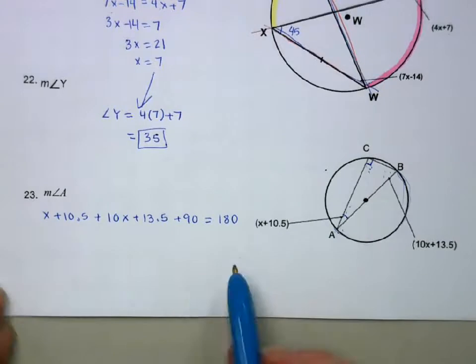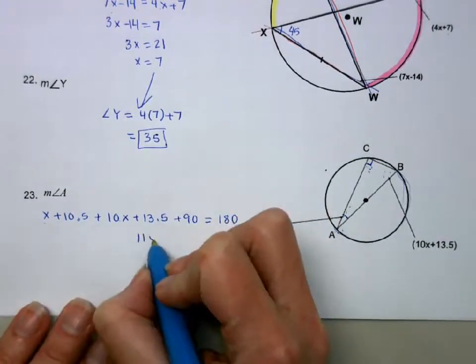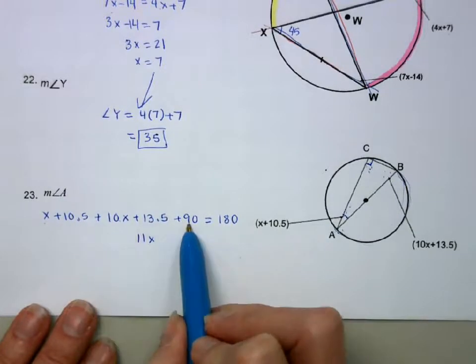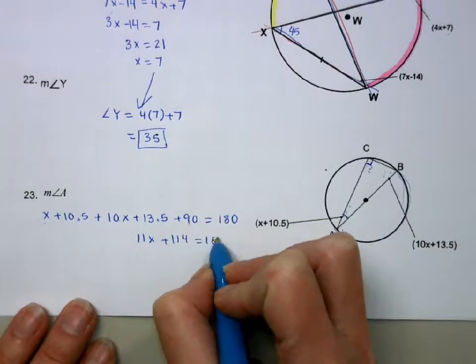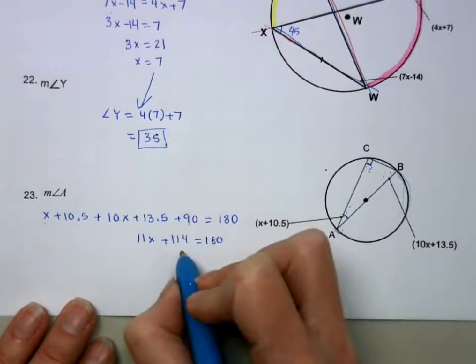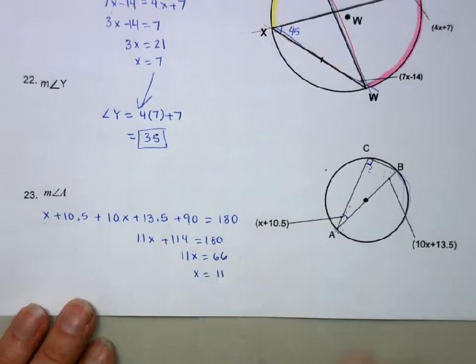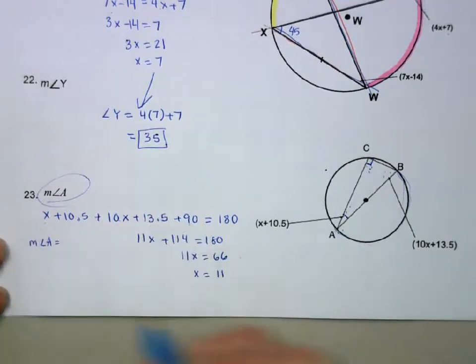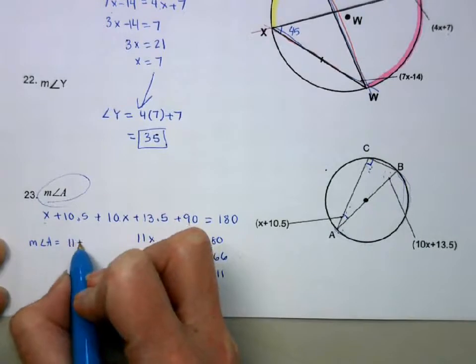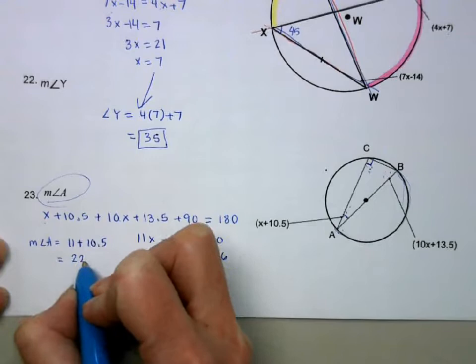So I'm going to combine my like terms. So X and 10X is 11X. And then 10.5 plus 13.5 plus 90 is 114. I'll subtract the 114 to get 66. So X is 11. But again, that's not what I want. I want angle A, so I need to plug that back in. So 11 plus 10.5 is 21, sorry, 0.5.